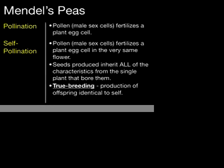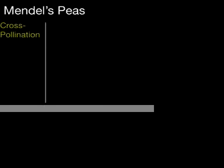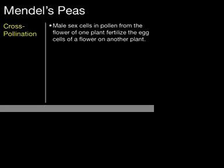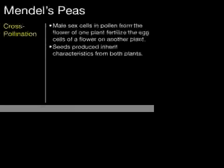The pea plants that Mendel cared for were self-pollinating, sometimes called true breeding. This resulted in several different stalks of pea plants that Mendel was later able to study. Contrasting the idea of self-pollination is cross-pollination, where male sex cells fertilize the eggs of another plant. The seeds produced inherit characteristics or traits from both plants, and these offspring are called hybrids.